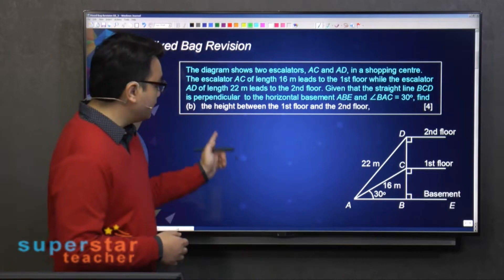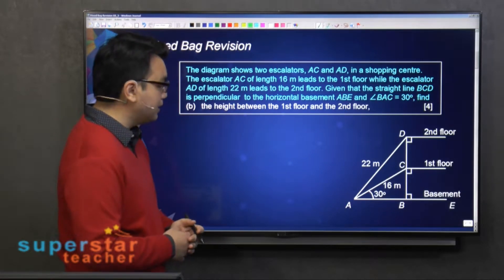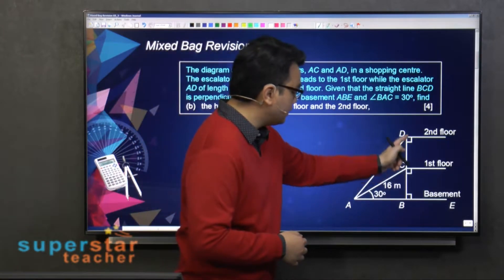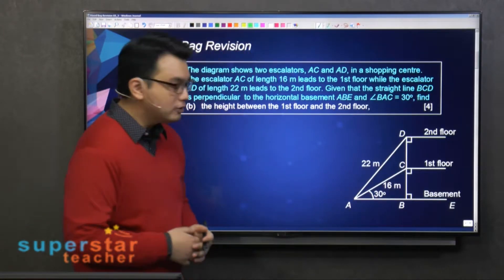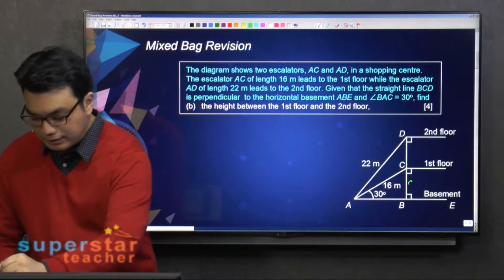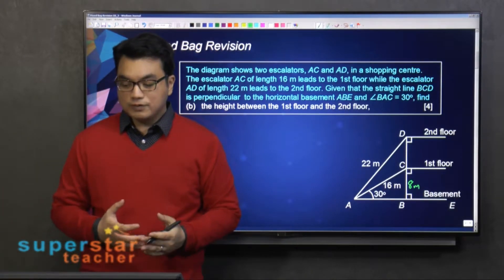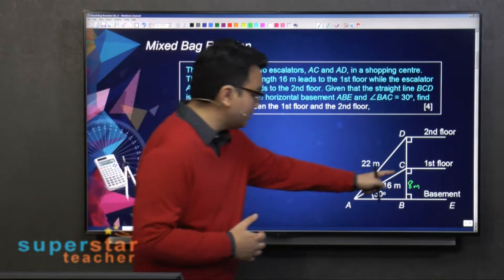Then for part B, find the height between the first floor and the second floor. Alright, so what is the height over here? Okay, so we've already found that this is 8 meters. Okay, so now for this case, can we just use this right-angled triangle?